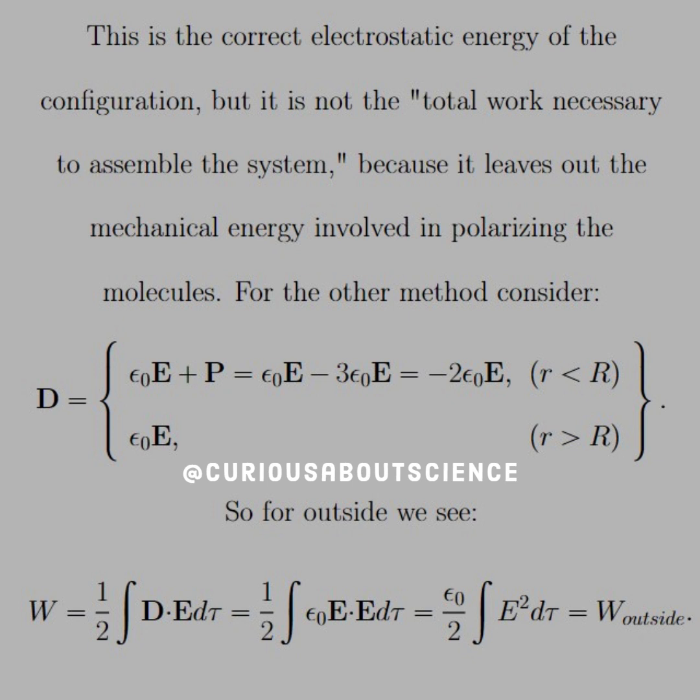For the other method, consider that the electric displacement D is equal to epsilon naught E plus the polarization P, which we know what that is from the other slide. P equals negative 3 epsilon naught E. So, we can just add them together to find D in terms of E inside the sphere.